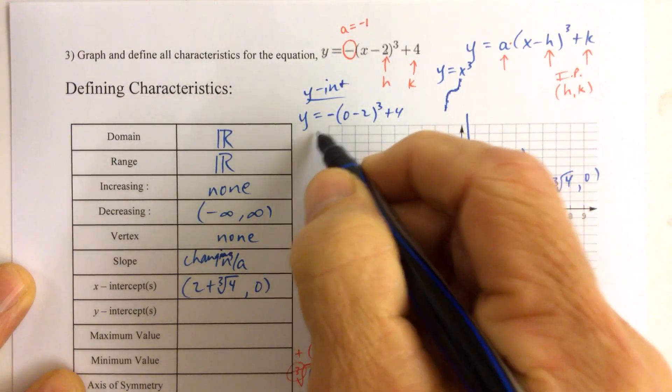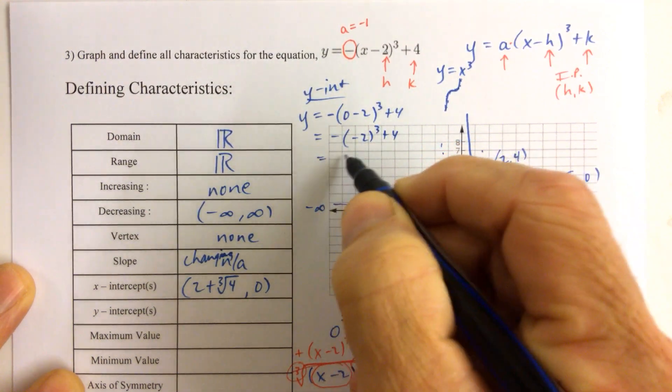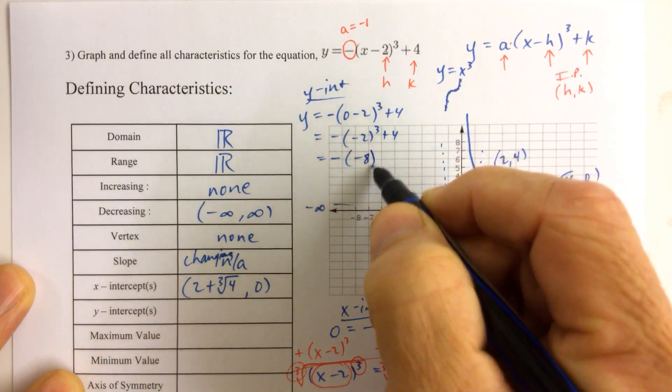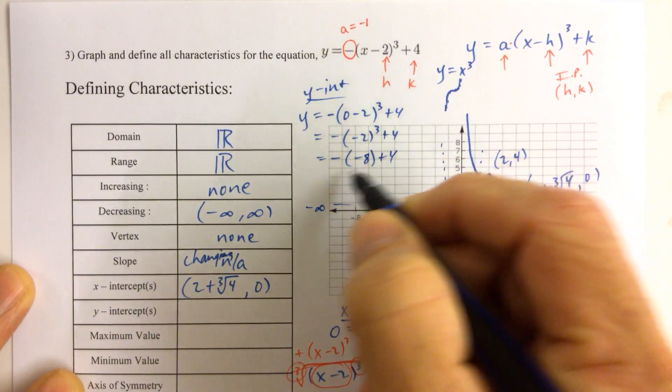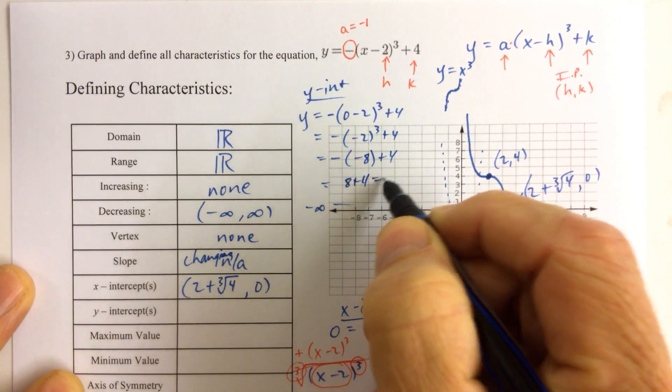Make sure it matches your graph as well. Negative 2 cubed plus 4. Negative 2 cubed is negative 8. Negative 2 multiplied by itself 3 times, plus 4. And then we have negative negative 8, so that's 8 plus 4. 8 plus 4 is 12.